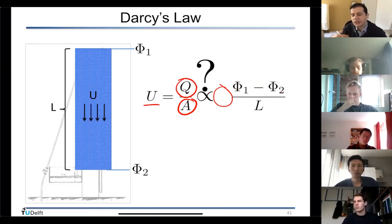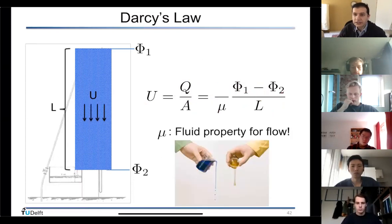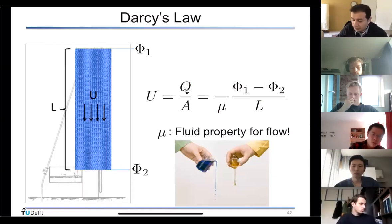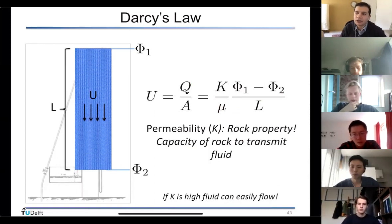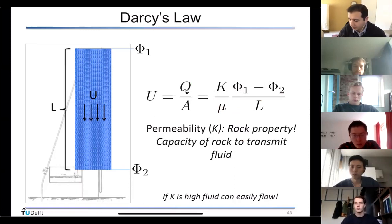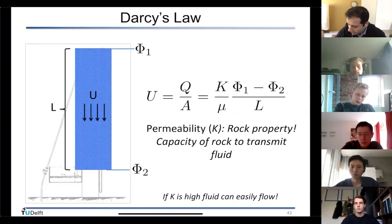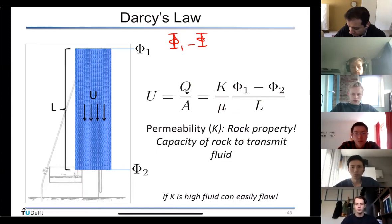One important factor is the fluid property — viscosity. If viscosity is high, velocity is smaller, so viscosity goes to the denominator. The rock property is permeability — how easily flow can happen inside the porous rock — so it appears as permeability divided by viscosity. Also, (φ₁ − φ₂) / L can be written as −(φ₂ − φ₁) / L.